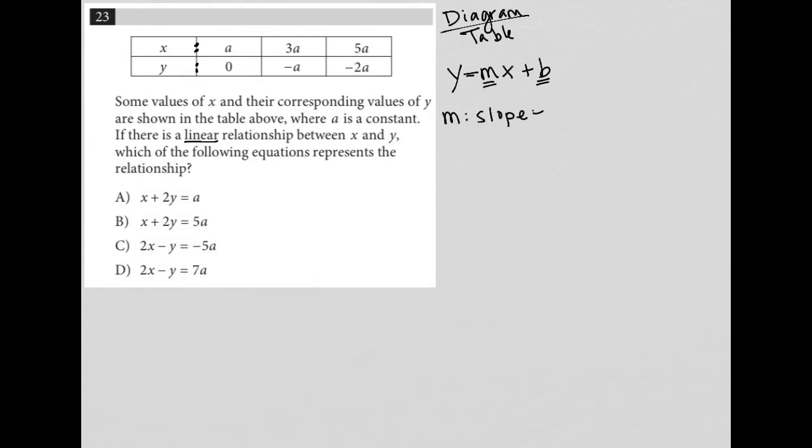And slope is equal to Y2 minus Y1 over X2 minus X1. So I need basically two ordered pairs. So I'm going to choose the first two that are in the table. So that is A comma zero. That's my X1, Y1 and 3A comma negative A. That's like my X2 and Y2.